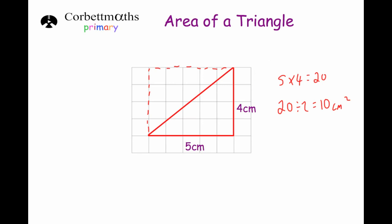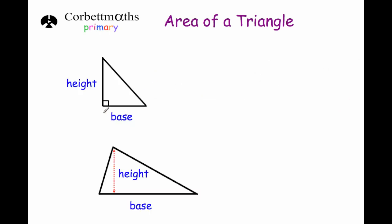That will work for any triangle as long as you know the base and the height. It works for a right angle triangle by turning it into a rectangle and halving it — base times height divided by two. It also works for other triangles such as a scalene one, as long as you know the base and the height. Just be aware that the height is the distance from the base to the highest point — it's not the diagonal. So you would do base times height divided by two.